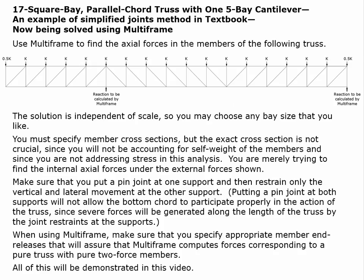This is a drawing of the 17 square bay truss. It has parallel chords — a top chord, a bottom chord, and two support points. One support is 5 bays in, which produces the 5-bay cantilever, and the other support is at the other extreme end of the truss. In multi-frame we're going to put in a 1-kip force. Multi-frame does not know what a p-force is, but we can put in any value and scale things accordingly. We'll use multi-frame to find the axial forces in the members.